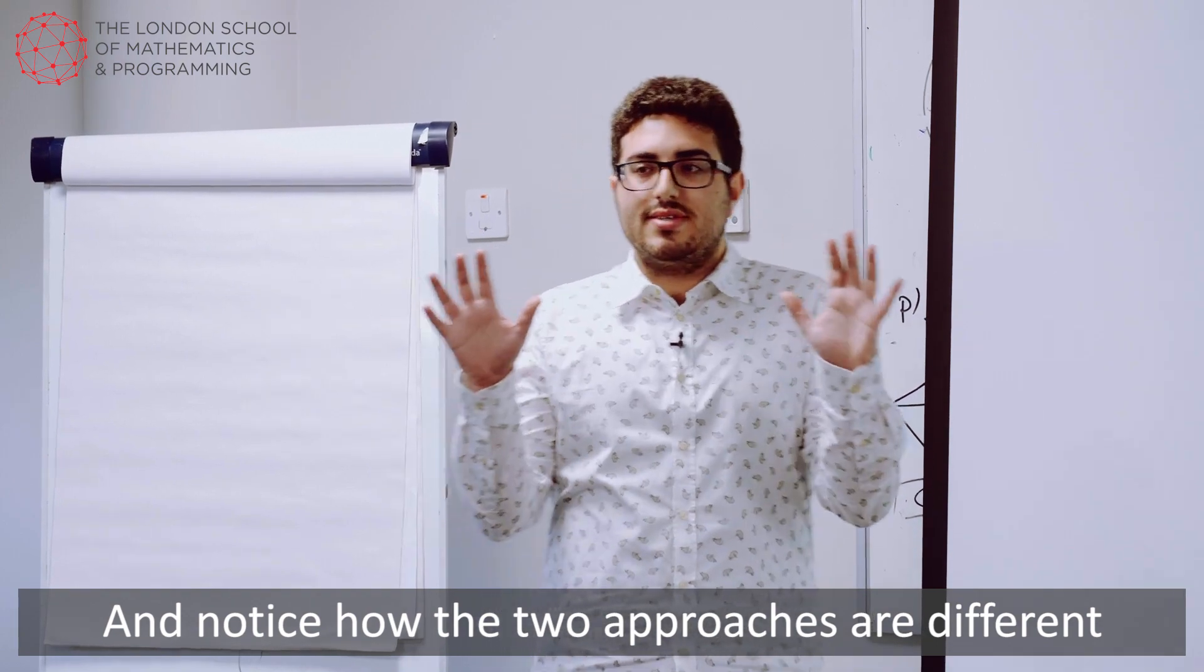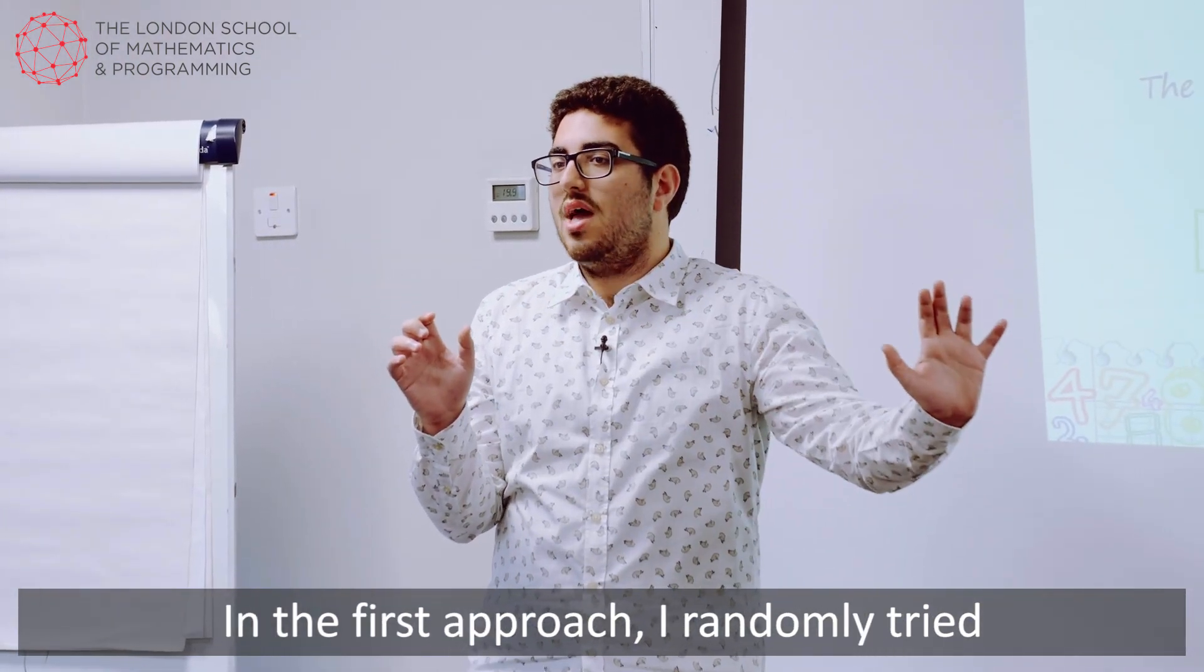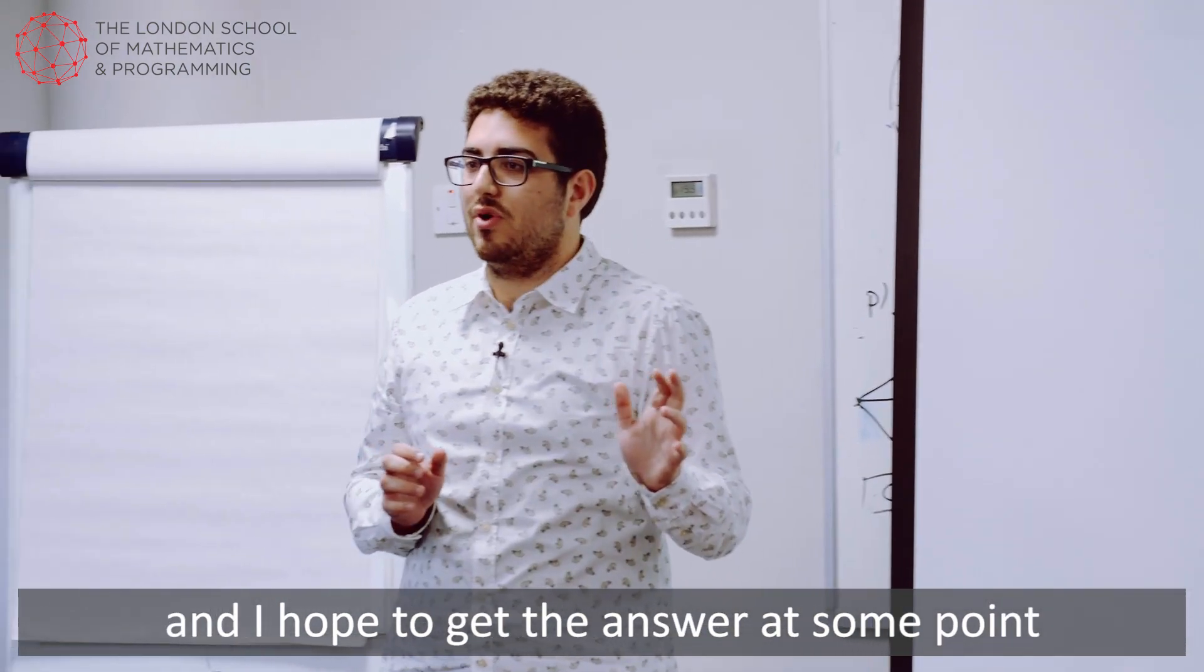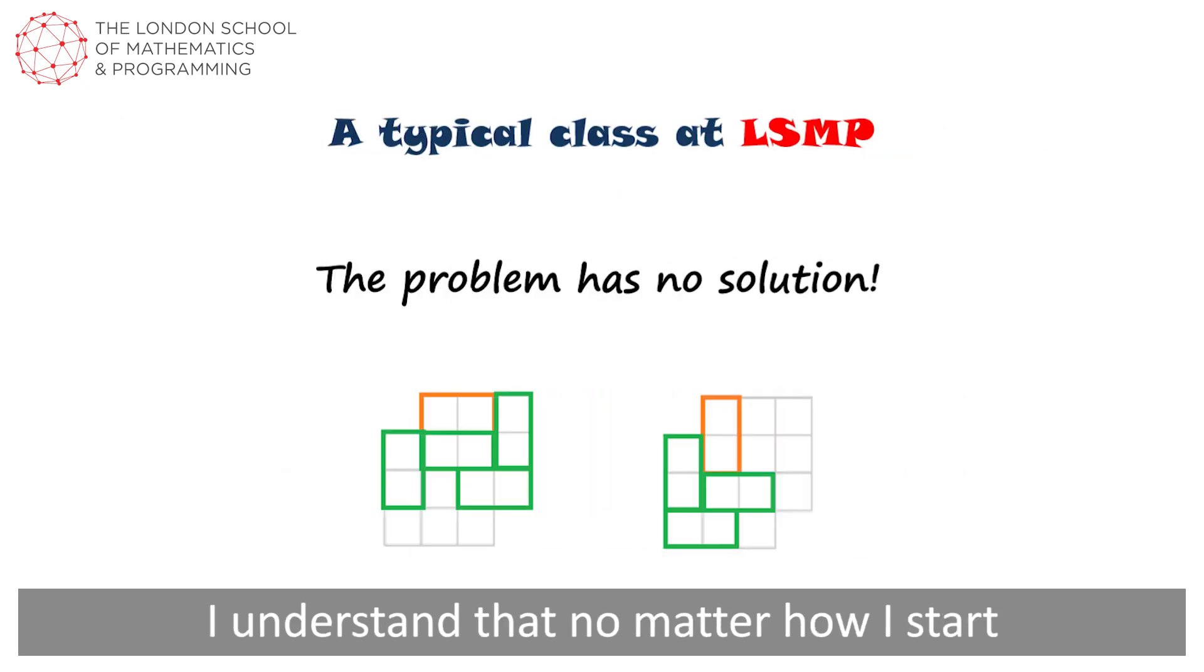And notice how the two approaches are different. So in the first approach, I randomly try and I hope to get the answer at some point. In the second approach, I systematically go through every single possibility. I understand that no matter how I start my covering, I will never end. So the problem has no solutions.